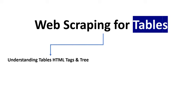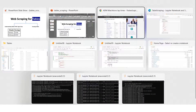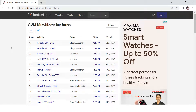To understand it better, we're going to divide it into two parts. First, we'll learn and understand the table HTML tags and tree structure, and then we'll start with scraping — first a simplest table, and then scraping a table from a web page.